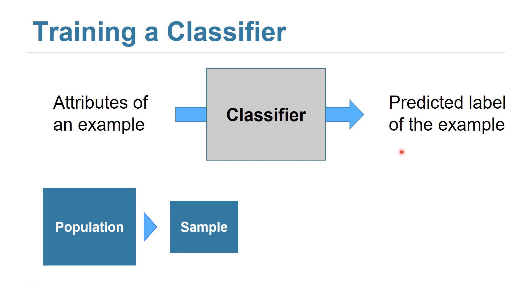To build a classifier, we need to have a sample from the population of images, for example in our scenario. This sample has to be randomly drawn from the population so that it will be representative of the population. And we also need, for each example, a label — for each image in our scenario, we need to know whether it has a cat or not.